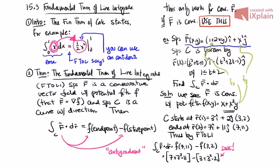You can see why this is so much easier. The long way would have been to plug the parametrization in, turn it into an integral from 1 to 2, do the integration, and plug in the endpoints — it gets pretty long. This method is much, much quicker than the alternative.